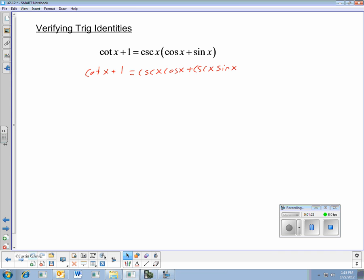Next, I am going to, again, I'm keeping the left side the same. I'm going to change cosecant into 1 over sine. So that's 1 over sine times cosine over 1 plus cosecant 1 over sine x times sine x over 1.